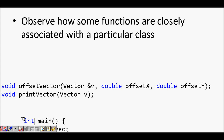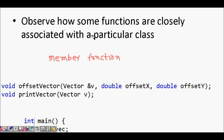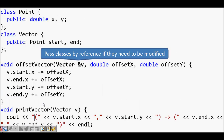In this lecture we are going to learn about member functions of a class. To understand that, let's revisit our previous example of vectors — a class vector and a class point. We observed how some functions are closely associated with a point, so let's take that example and look at this piece of code.